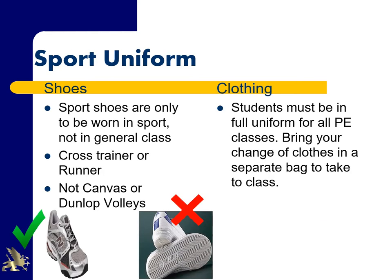The college has a sport uniform. On days that your child has sport, they bring it in their bag, get changed for the sport class, then go back into their regular uniform. Sport shoes are only to be worn in sport classes, not in general classes. The sport shoe should be a cross trainer or runner, not a canvas shoe or Dunlop volley, as they do not provide adequate foot support. Students must be in full uniform for all PE classes — you can't wear a blend of regular and PE uniform.